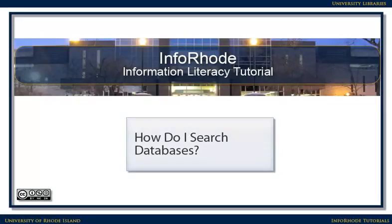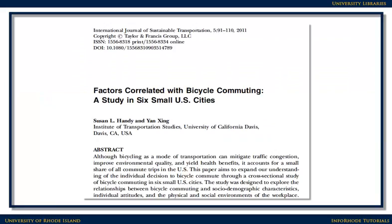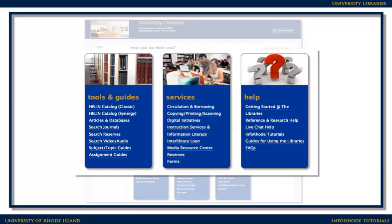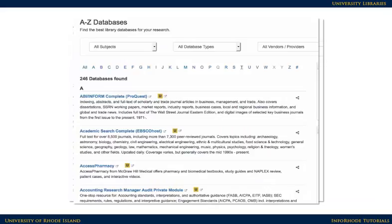How do I search databases? Databases are a quick and easy way to find articles and other credible materials on a topic. You can get to our databases by clicking on the Articles and Databases link on the library's homepage. Here's the Articles and Databases page with databases listed in alphabetical order.